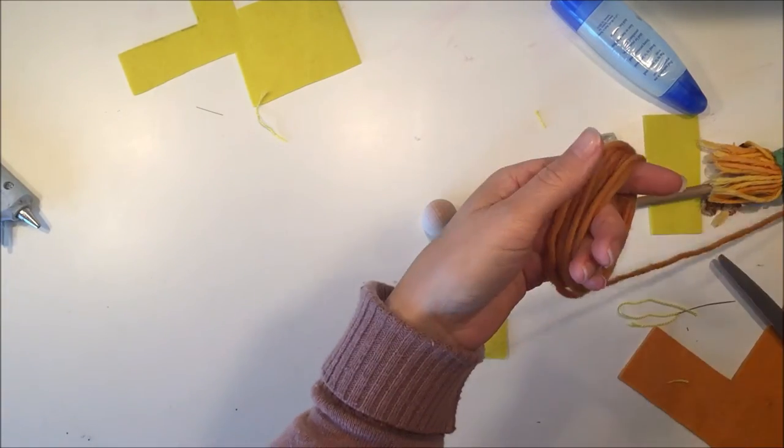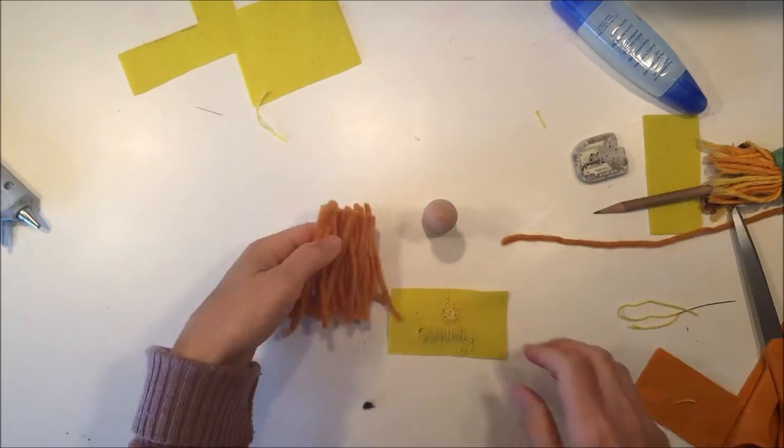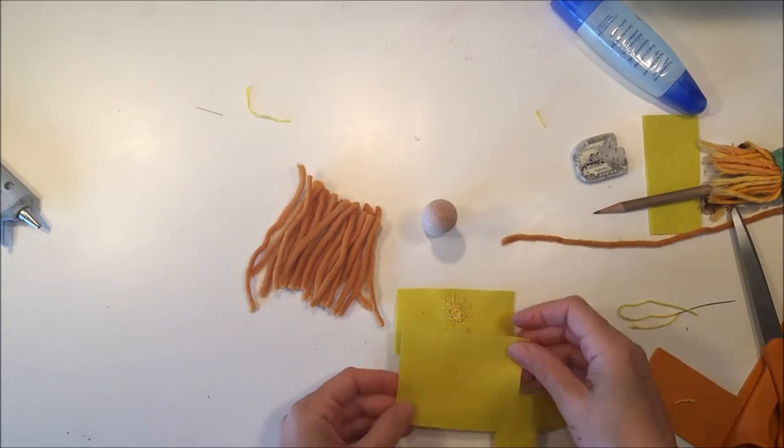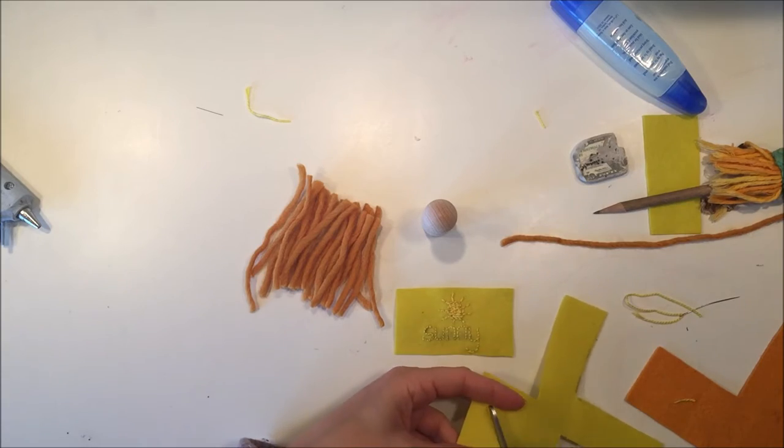So I'm going to work on her hair right now, and I'm just wrapping a bunch of yarn around my fingers, and then I can snip both ends, and that's just a quick and easy way to get some hair.